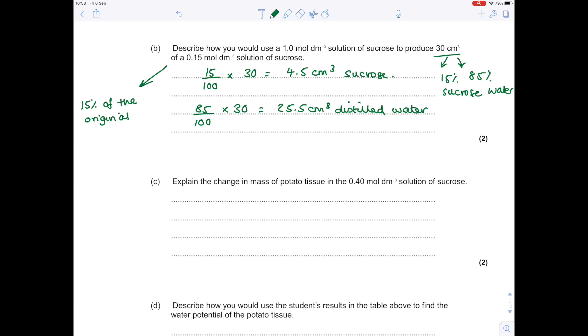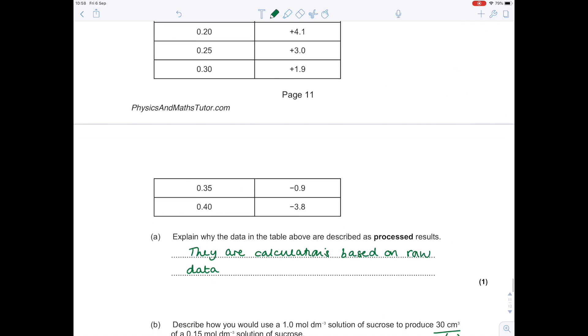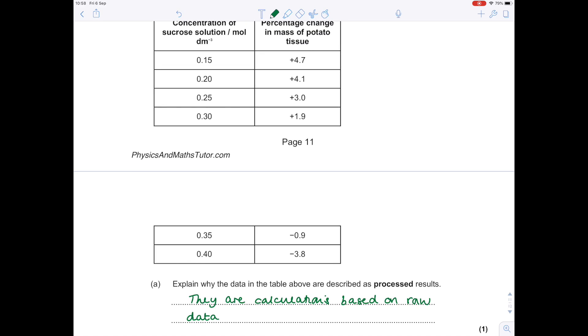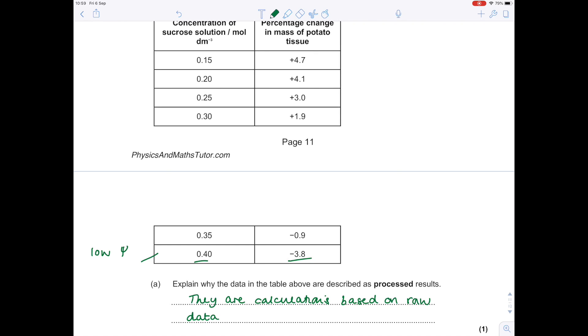Explain the change of mass of potato tissue in the 0.4 mole solution of sucrose. We're looking at this one—we see that it has decreased in mass. Why? Well, because that concentration of sucrose solution is at its highest, it means that it has a low water potential. Therefore, osmosis will occur and water movement will occur from the potato tissue into the surrounding solution.